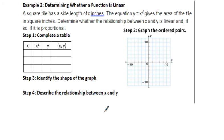A square tile has a side length of x inches. The equation y equals x squared gives the area of the tile in square inches. To find the area of a square, it's the side times the side - that's where we get x squared. Determine whether the relationship between x and y is linear, and if so, is it proportional. Let's use negative 2, 0, and 2. We're going to go negative 2 squared. Remember, squaring is negative 2 times negative 2. A negative times a negative is positive. 2 times 2 is 4. So we're going to have the point negative 2, 4.